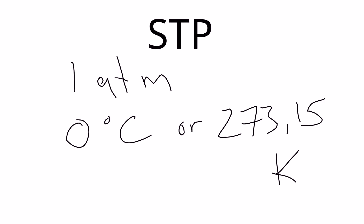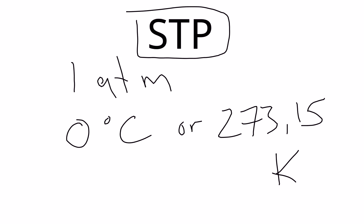STP comes up separately because many questions will say "calculate the volume of this gas at STP," and students think they weren't given a temperature or pressure. They were — it's implied in the STP terminology. Standard temperature and pressure means one atmosphere and 273.15 Kelvin, or zero degrees Celsius.